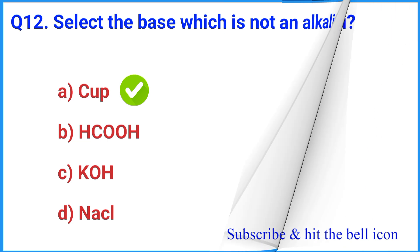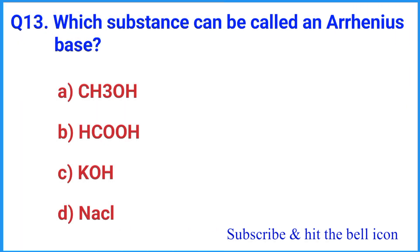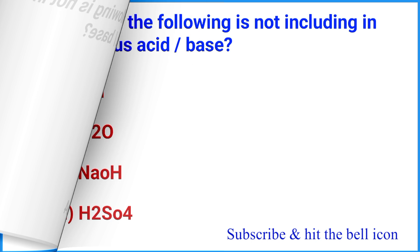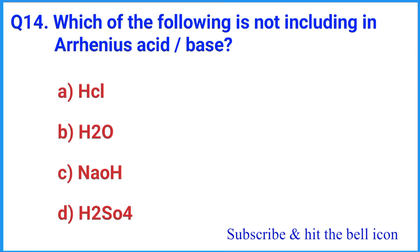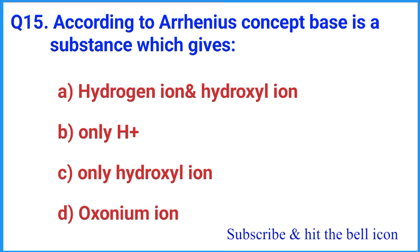Question number 13: Which substance can be called an Arrhenius base? The correct answer is option C: Cu(OH)2. Question number 14: Which of the following is not included in Arrhenius acid/base? The correct answer is option B: H2O. Question number 15: According to Arrhenius's concept, a base is a substance which gives — the correct answer is option C: only hydroxyl ion (OH-).